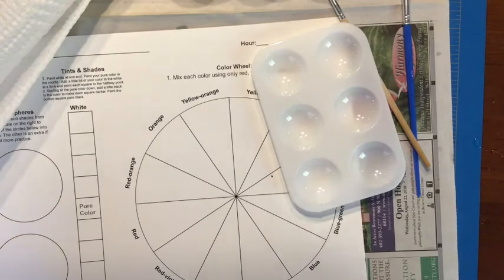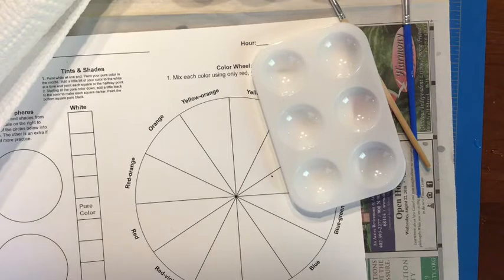Once you have all of these supplies, you're ready to start painting. Make sure that you talk to your parents or guardians about a good place to paint, so that you're not painting somewhere that it would be really bad to spill.